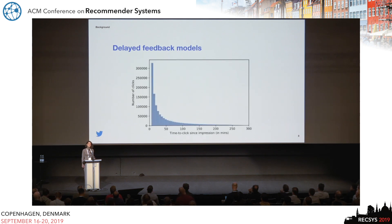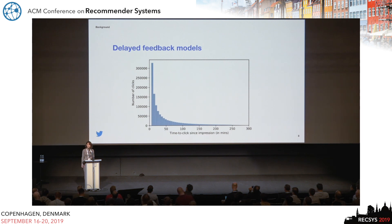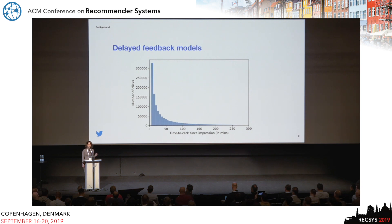In this plot, which is generated from our cleaner training data, we can see on the x-axis the time to click since impression in minutes, and on the y-axis the number of clicks. It's pretty obvious that assuming an exponential distribution for the time to click is a reasonable choice. At the same time, we can see that for many of the ads, users will only engage with them even with a five-hour delay.